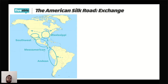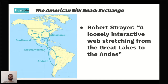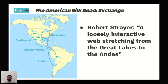I want to wrap up with a discussion of something called the American Silk Road. This term is inspired by historian Robert Strayer, who notes that while the Silk Road gets a lot of attention for being well-documented and extensive, the Americas had something somewhat similar — a loosely interactive web stretching from the Great Lakes and the Mississippi in the north down to the Inca in the Andes. In a way, the Americas had their own form of Silk Road, with ideas, trade goods, and foods diffusing along this network.